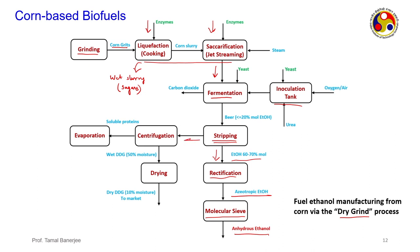After stripping, the solid material is sent to centrifugation. The solids have two components: dry distiller's grains (DDG), which can serve as cattle feed and are sent to market, and soluble proteins from the centrifuge supernatant which are used for further processing. So from grinding, you obtain ethanol, dry distiller's grains, and soluble proteins. This is the dry grind process — the first initial process formulated for corn ethanol.